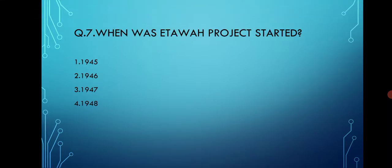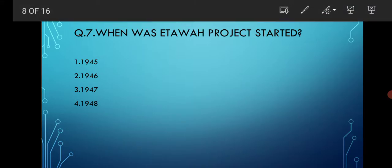When was the Etawah Project started? Options are 1945, 1946, 1947, and 1948.